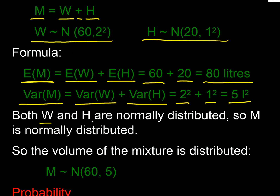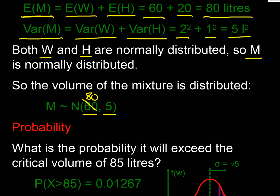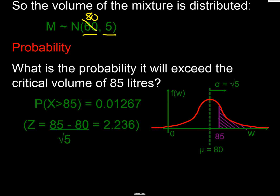Note that the variance adds, but the standard deviation (the square root) may not necessarily be larger. The variance is 2² + 1² = 5 liters squared. Since both the water and hydrochloric acid volumes are normally distributed, their mixture is also normally distributed. So our final mixture volume is N(80, 5) — mean 80, variance 5. This is why we write normal distributions using mean and variance.